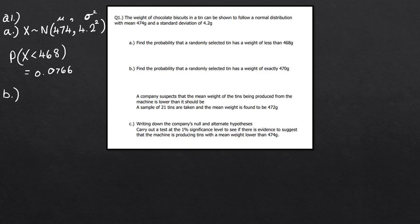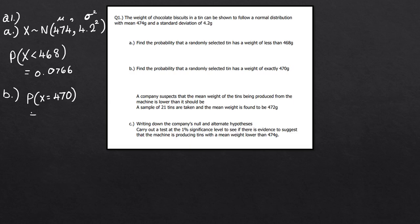For part B, we're asked to find the probability that a randomly selected tin has a weight of exactly 470 grams. You don't actually need a calculator here. The normal distribution is a continuous distribution, so we can't calculate exact probabilities. Therefore, P(X = 470) = 0, and this is true for any exact value - 500, 300, or even 474 - it's always 0 for a continuous distribution.